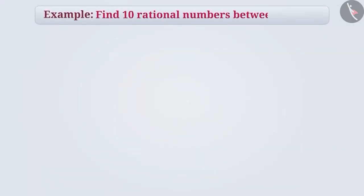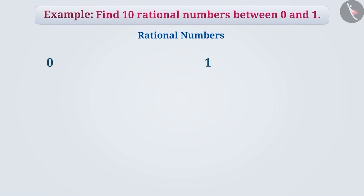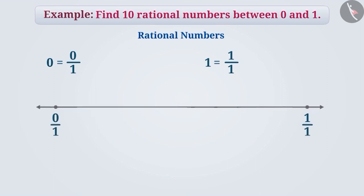Find 10 rational numbers between 0 and 1. Both 0 and 1 are rational numbers because we can express them as 0 by 1 and 1 by 1 respectively. There are an infinite number of rational numbers between any two rational numbers. Let's find 10 rational numbers between 0 by 1 and 1 by 1.